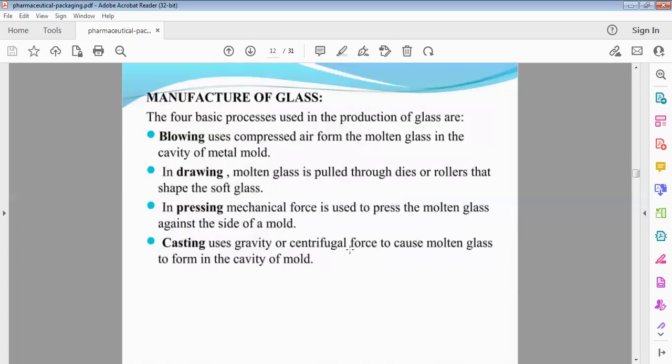Manufacturing of glass. There are four basic processes. One is blowing - compressed air into molten glass in a metal mold to produce glass. Drawing - molten glass through dies and rollers to produce soft glass. Pressing - mechanical force applied to molten glass. Casting - using gravity or centrifugal force on molten gas in cavity of mold.